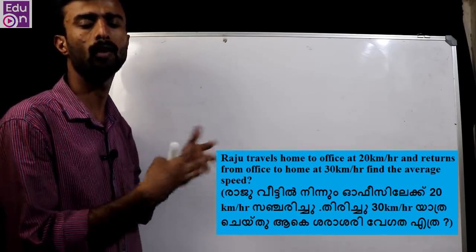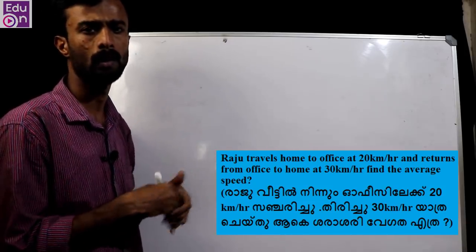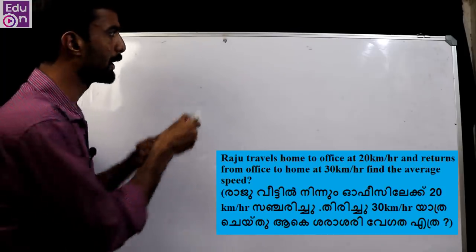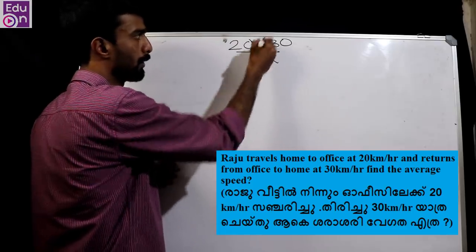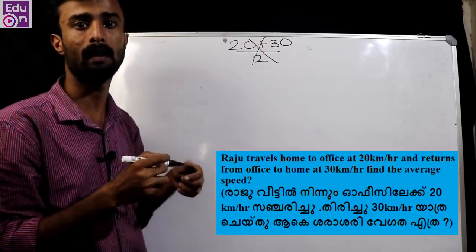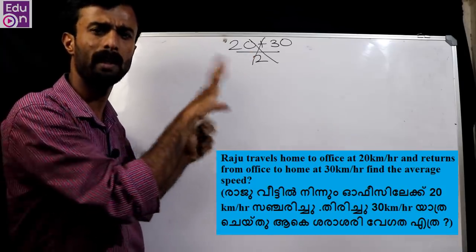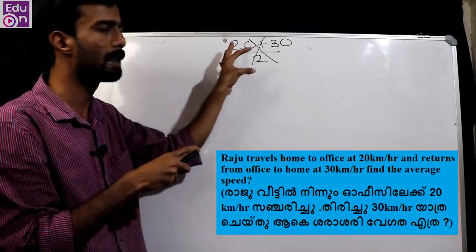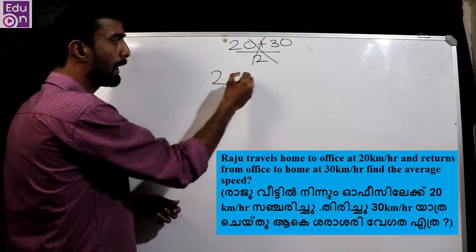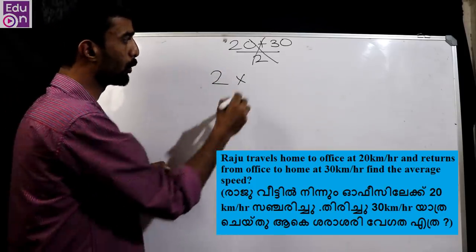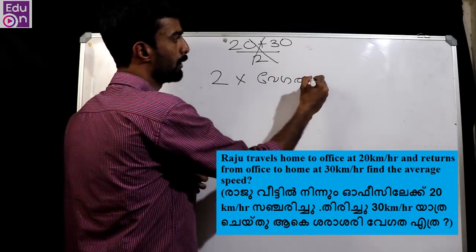If Raju went to the office at 20 km per hour and returned at 30 km per hour — one is the highest speed and the other is the lowest speed. We need to find the average speed across both trips.